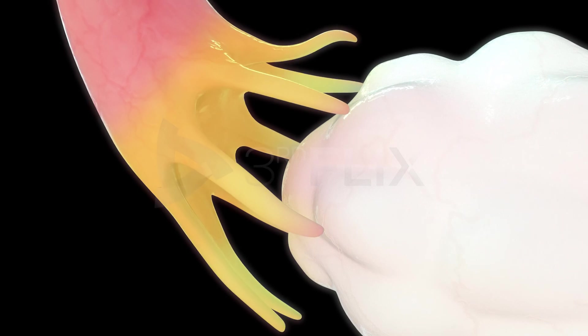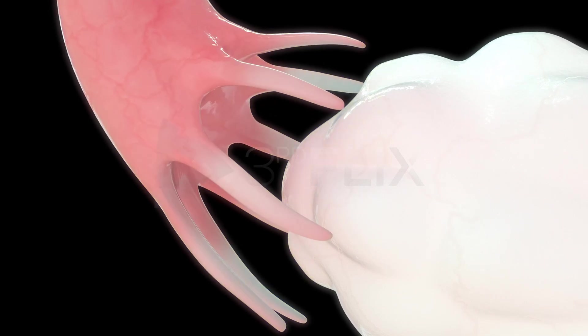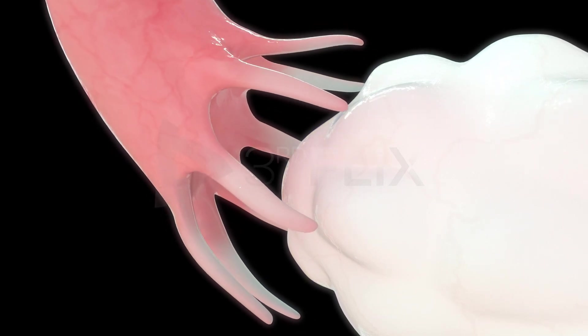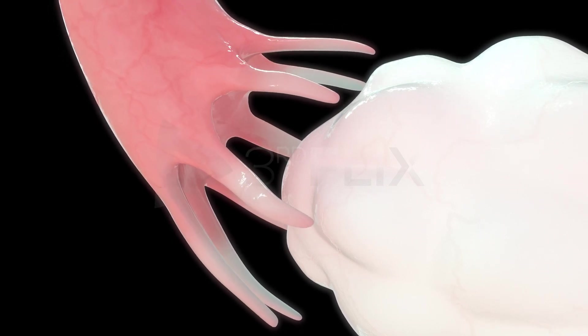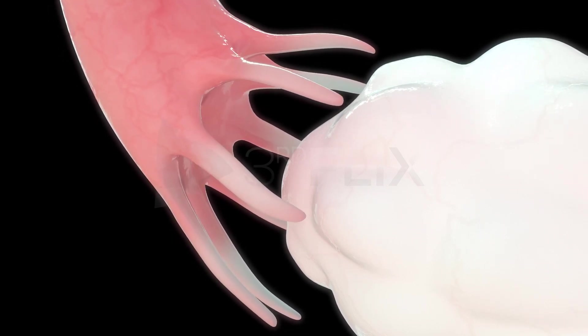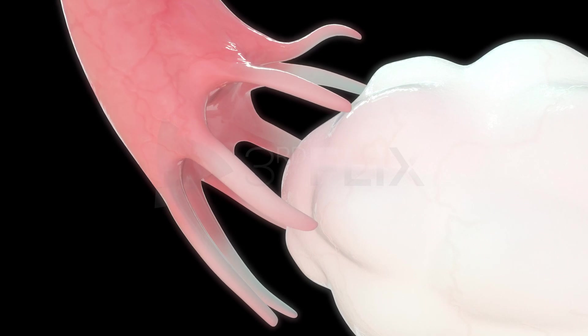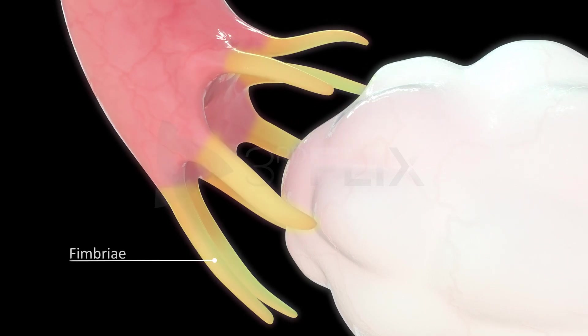The infundibulum is a funnel-shaped structure that lies close to the ovary. The margin of the infundibulum is fimbriated, meaning it has a large number of finger-like processes called fimbriae.